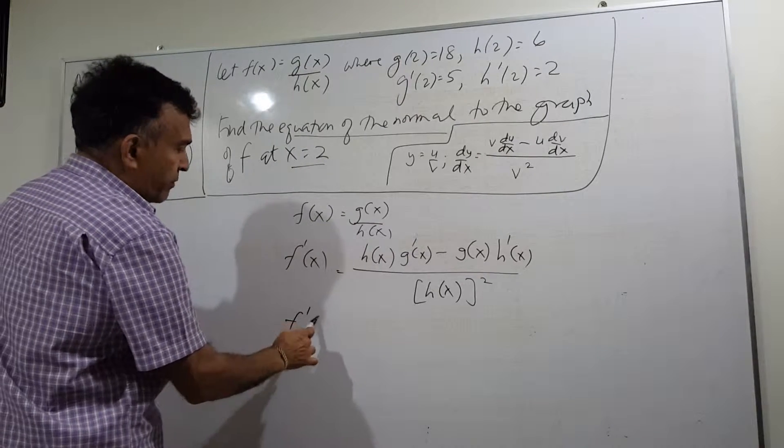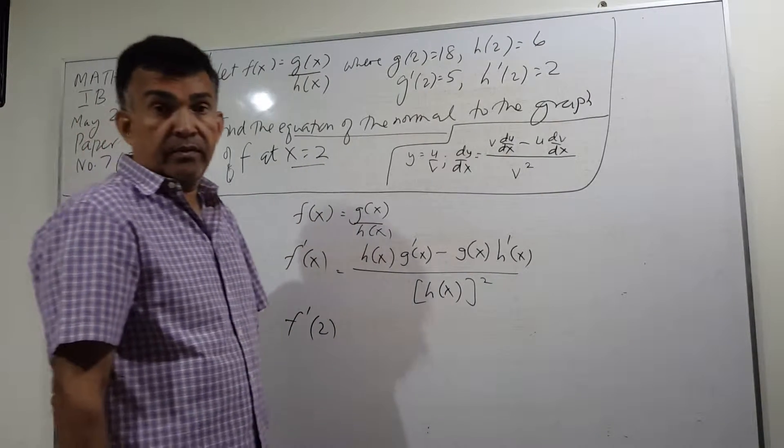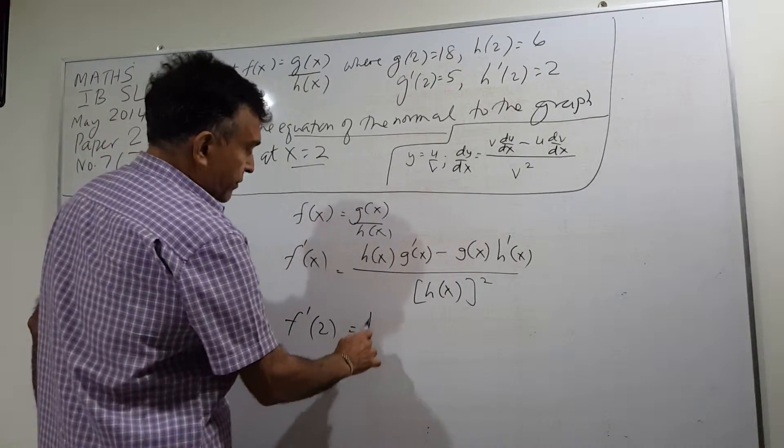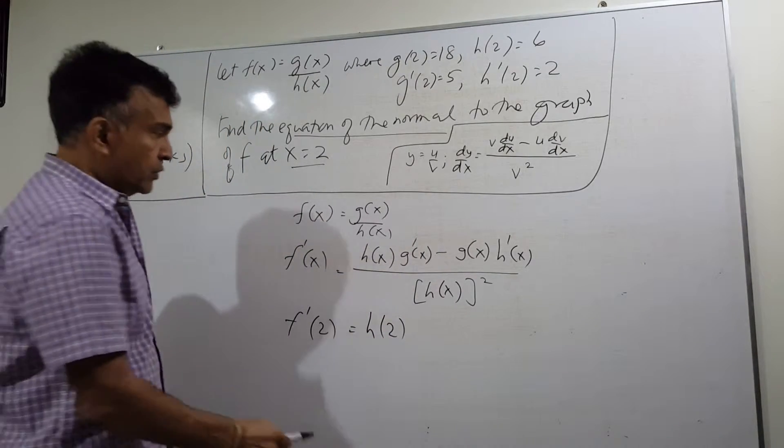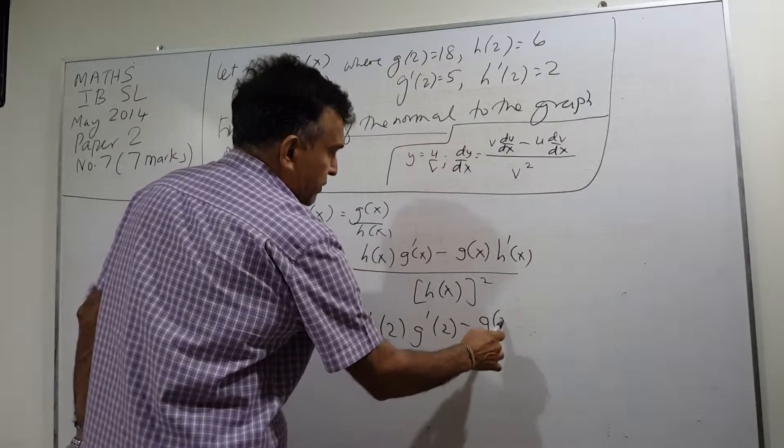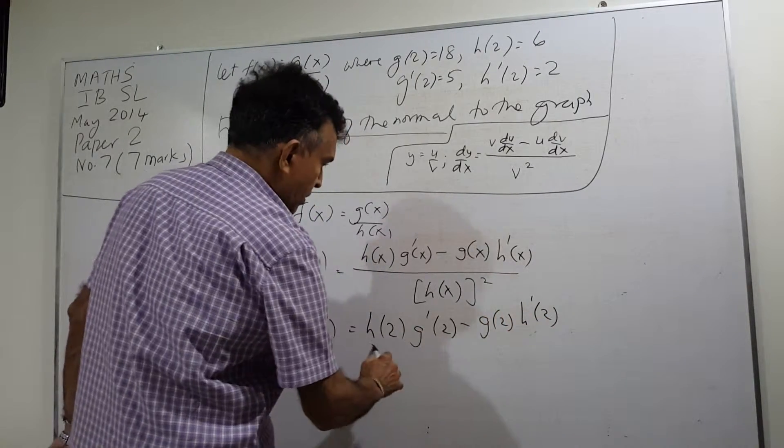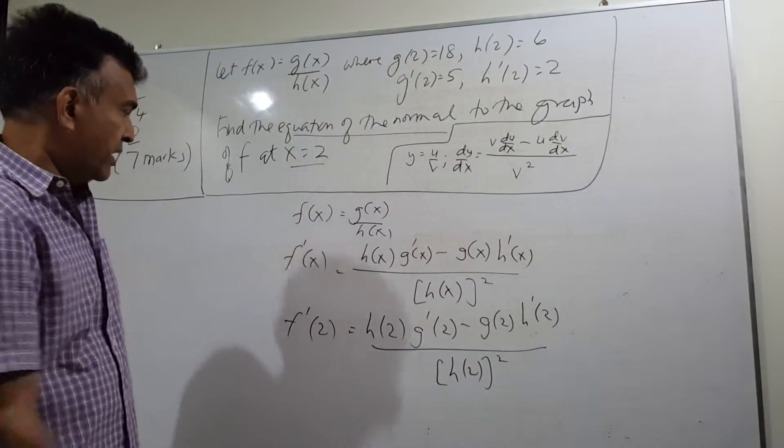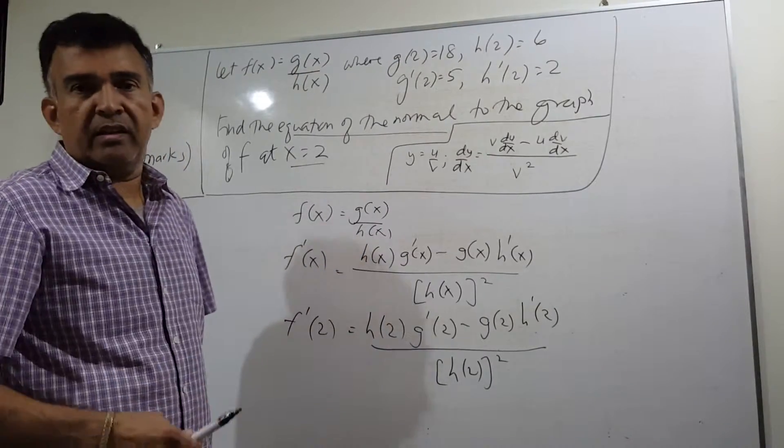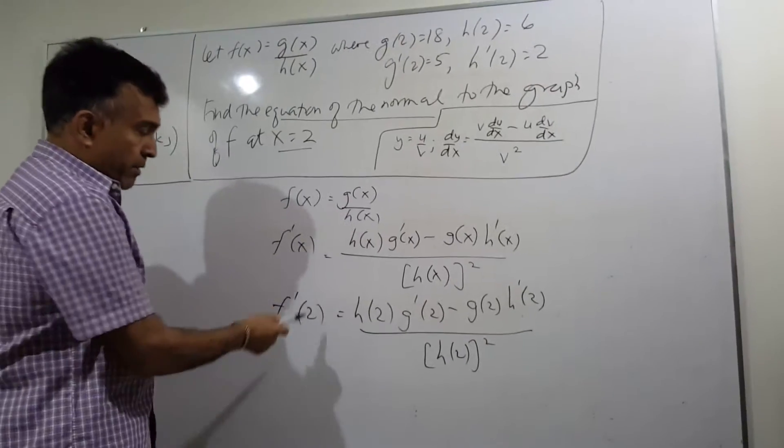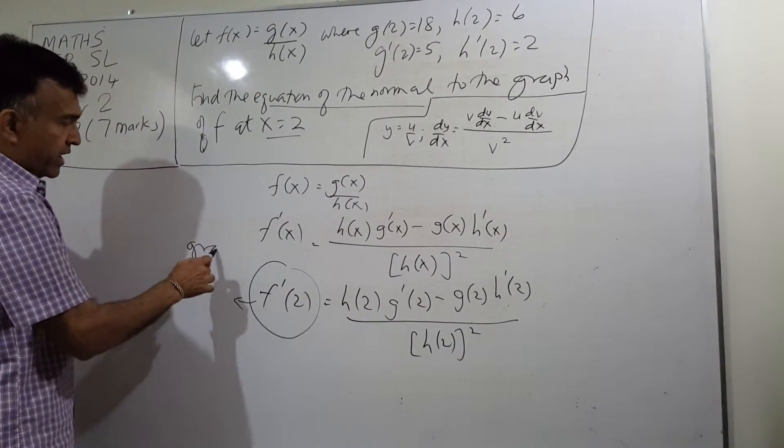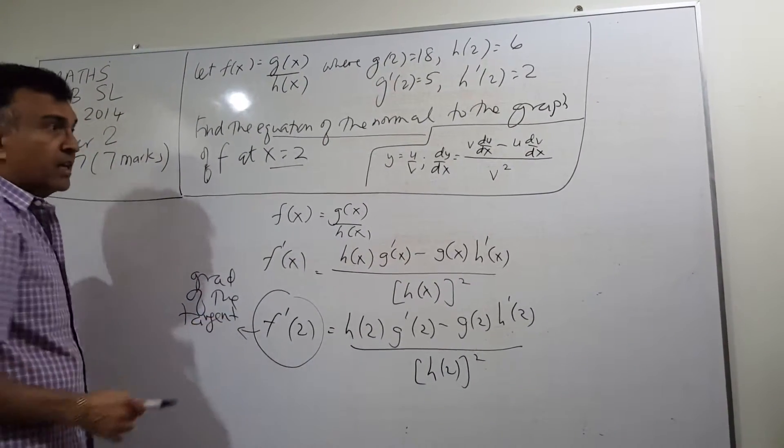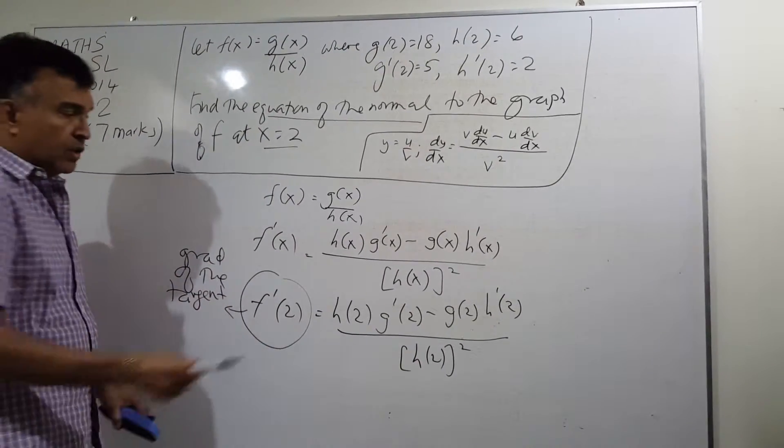I can work out f prime 2, the value of the derivative. The value of the derivative at x equals 2, that will be just plugging in the value of x: h(2) g prime 2 minus g(2) h prime 2 over h(2) whole thing squared. This gives me the gradient of the tangent to the graph of f where x equals 2.